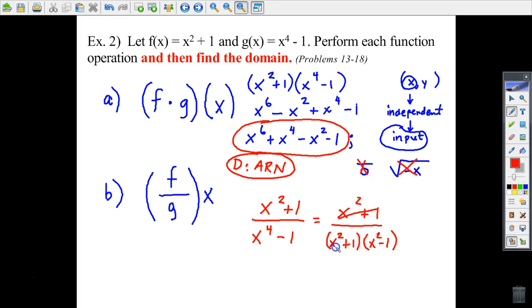And in factoring, I see an opportunity now to reduce. We can cancel these x squared plus 1 factors. So I'm left with this reduced fraction as the result of dividing f by g. Now I'm ready to state the domain.